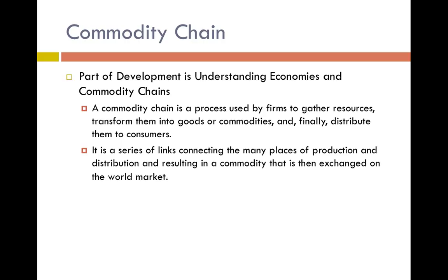Each commodity chain is unique by each product type. Obviously, where we get bananas is going to be very different — the commodity chain for bananas is very different from where iPads come from. Different stages can involve different economic sectors to come together for one final product.